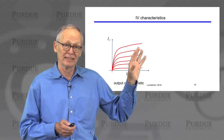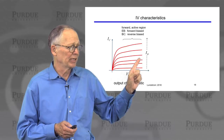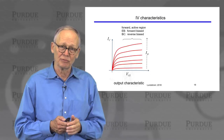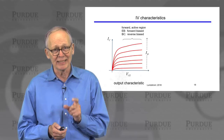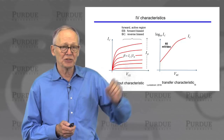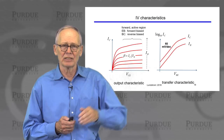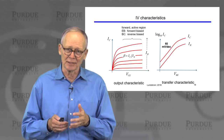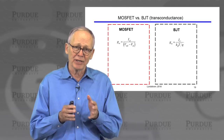The IV characteristics of this device look very similar to the output characteristics of a MOSFET — we're stepping base current instead of stepping gate voltage. The region we operate in for RF circuits is like the saturation region for a MOSFET; we call it the forward-active region of the bipolar transistor. That's the region where the base-emitter junction is forward biased to inject electrons into the base, and the base-collector junction is reverse biased to collect those electrons when they diffuse across the base.